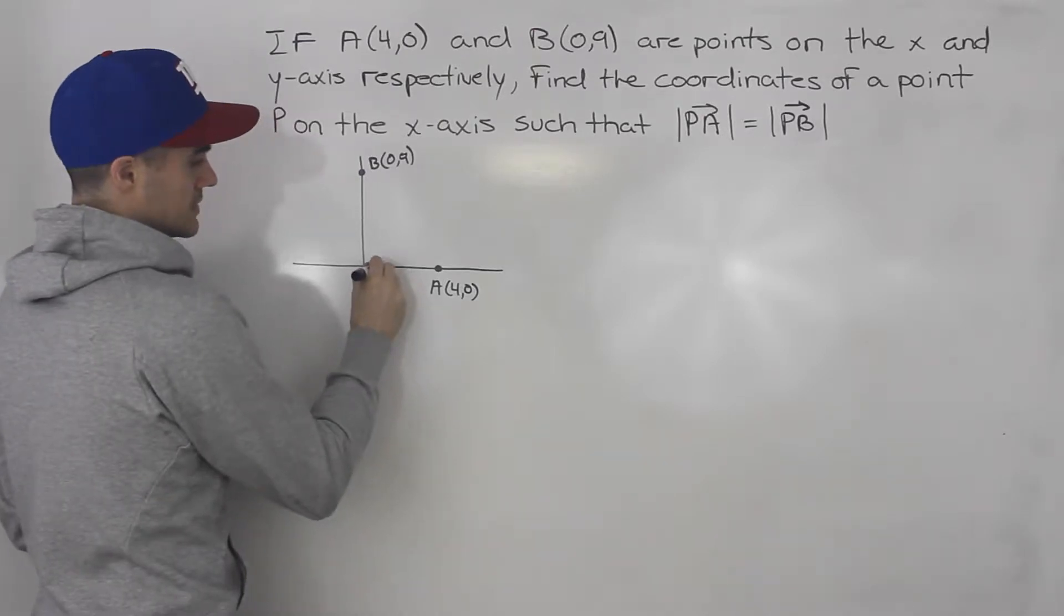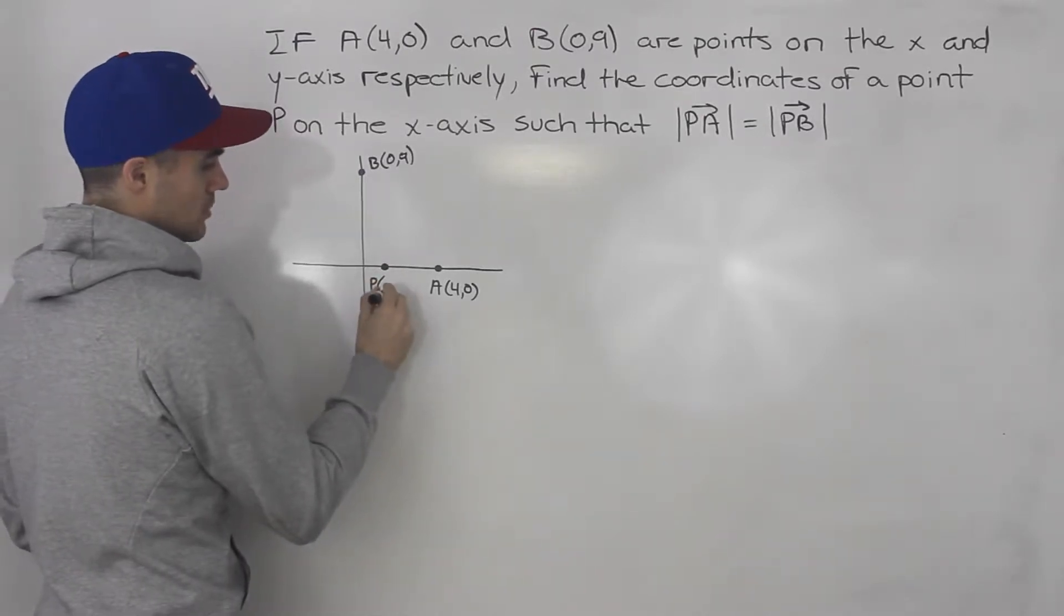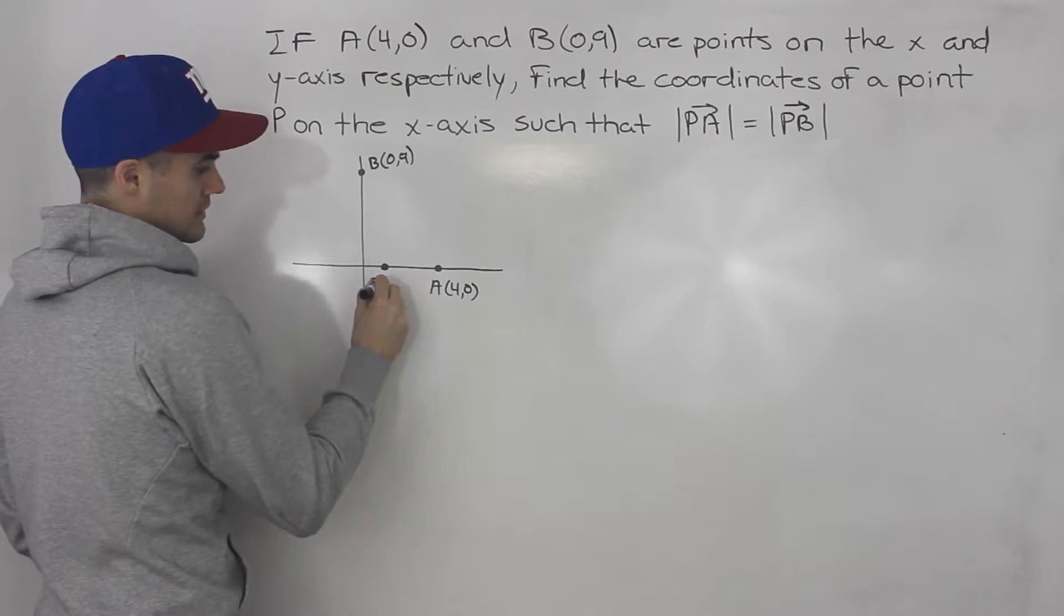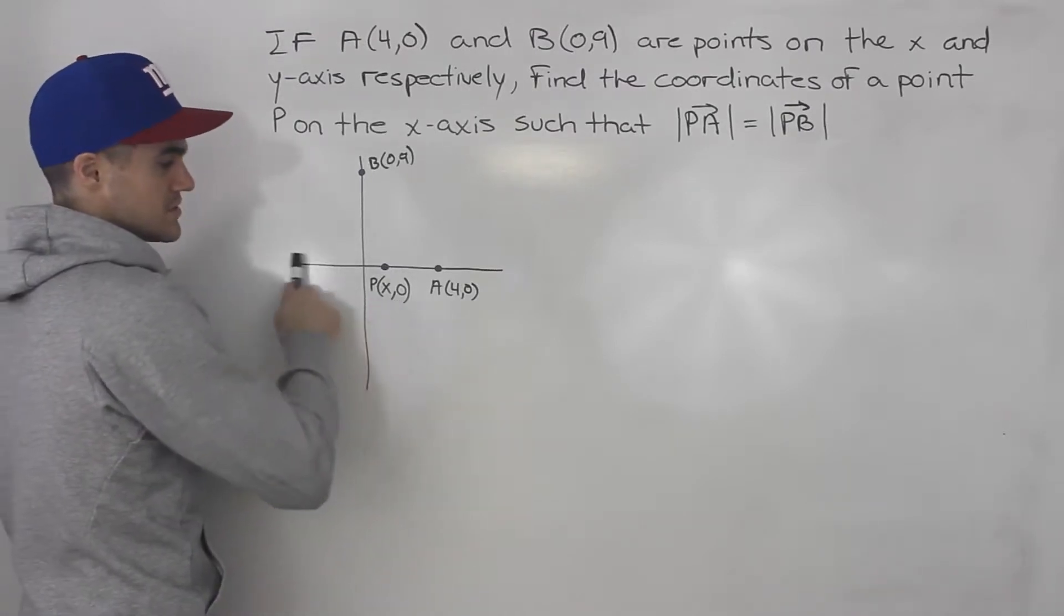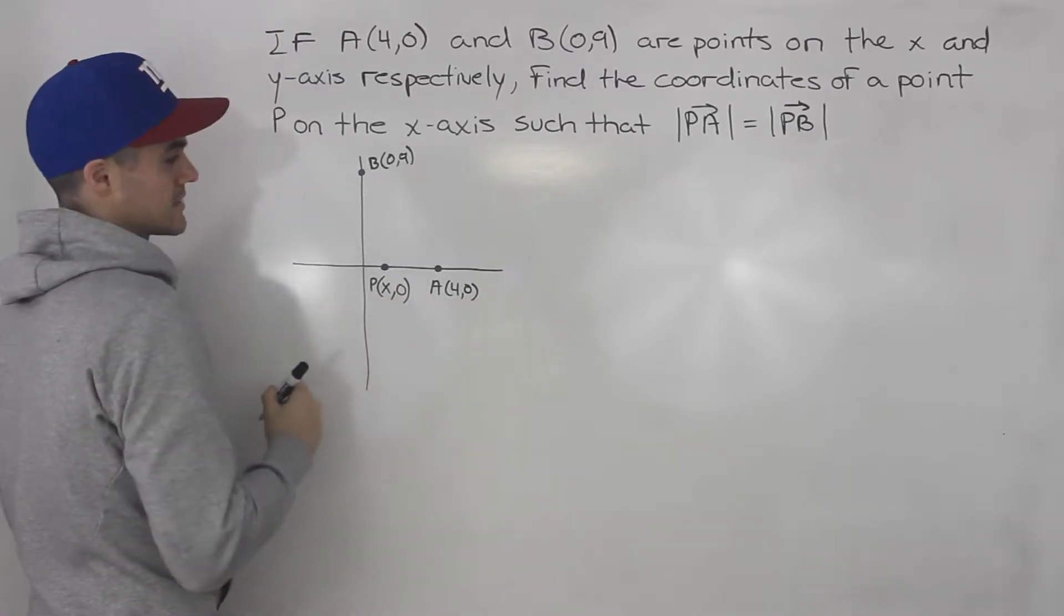If this point is going to be on the x-axis, then we know the format of the coordinate is going to be (x, 0), some kind of x value. We don't know what it is, we're going to be solving for that. But we do know the y value is 0 because it's on the x-axis.